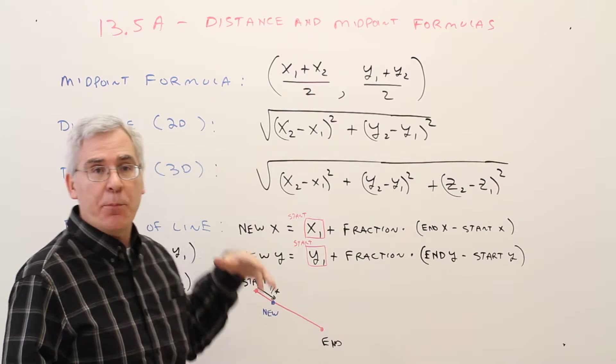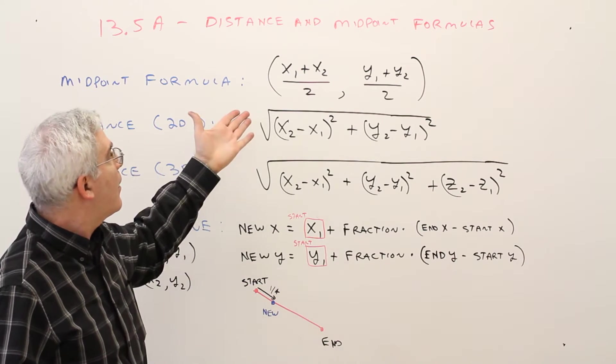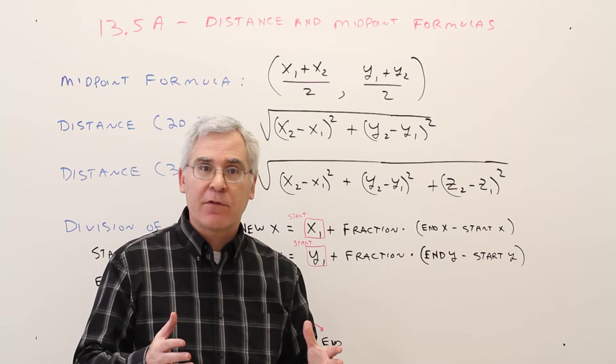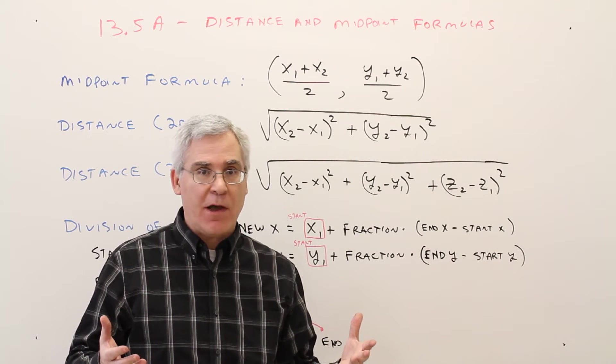First one, the midpoint formula. I like to remember it as just, it's the average of the x, comma the average of the y.